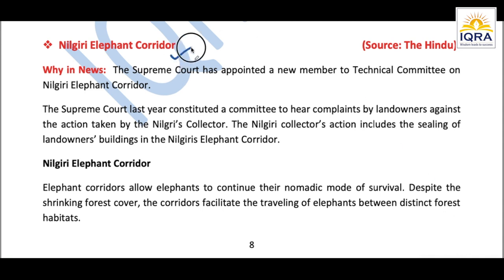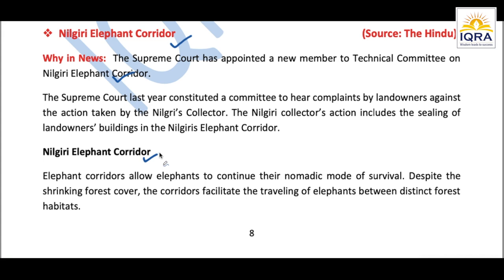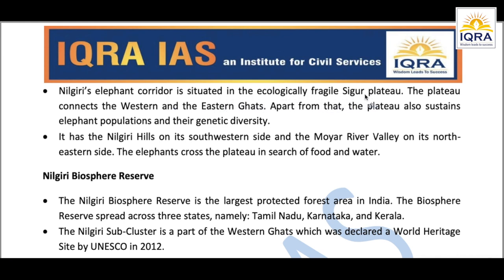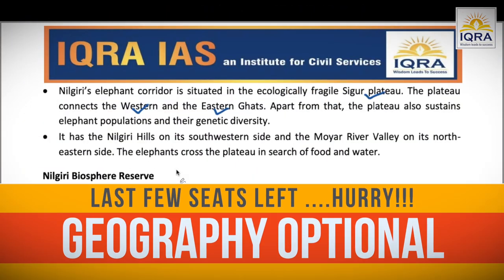Next topic: Neelgiri Elephant Corridor. The Supreme Court recently appointed a new member to the Technical Committee on Neelgiri Elephant Corridor. The Neelgiri Elephant Corridor is situated in the ecologically fragile Sigur Plateau and connects the Western and Eastern Ghats — this was a direct UPSC question. It is situated near Mudumalai National Park in the Nilgiri District. Challenges include narrowing passage width, human encroachment, and interrupted corridors.